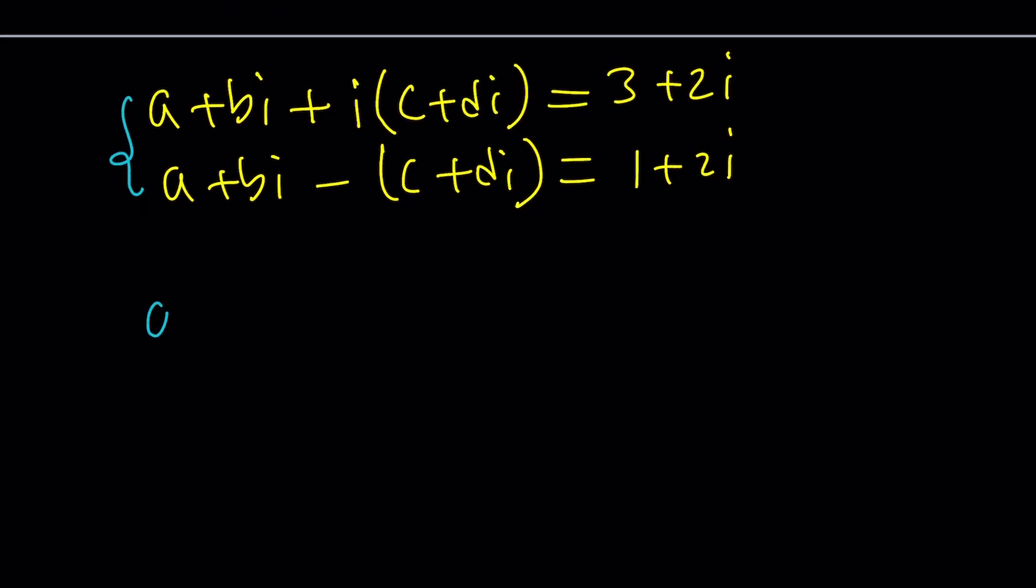Now, let's go ahead and simplify each of these equations. The first one gives us a. Here, we get di squared which is minus d plus b plus c. That's going to be our imaginary part is 3 plus 2i. We can go ahead and work with this and come up with an equation.